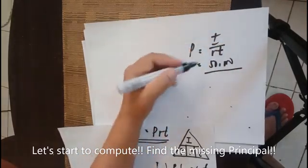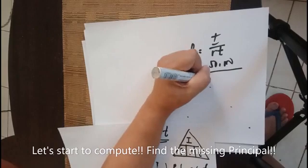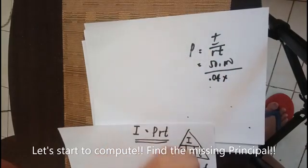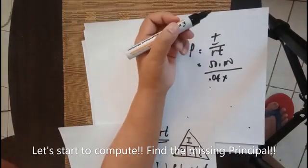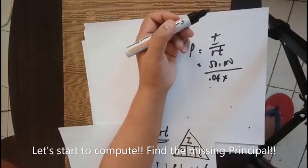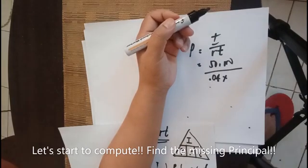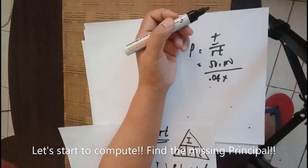And then the rate is 4% or 0.04 multiplied by 3.5 years. So 3 times 12 for 12 months, so we have 36 plus one half year is another 6 months.